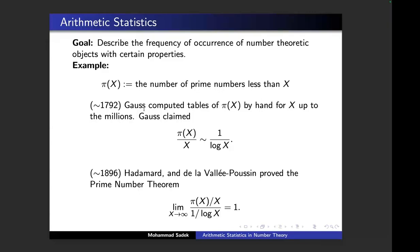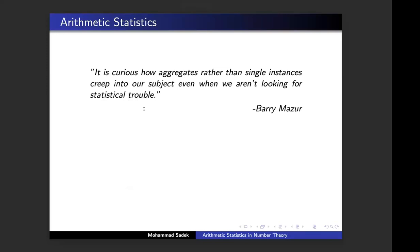Then we spend time trying to prove these conjectures. Another thing this example shows is that number theory is not about single instances — it's more about aggregates, collective data. Instead of thinking about one prime, think about the whole set of primes. Barry Mazur is claiming that aggregates appear to us even if we are not looking for them. Even if we are looking for single instances, collective data appears to us.